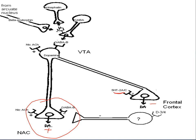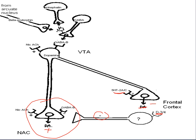Too much serotonin in the frontal cortex causes less dopamine to be released, which is where we see the negative symptoms and cognitive effects. Also, less dopamine activity from the frontal cortex removes the brakes off the nucleus accumbens, further increasing dopamine release there. So: nucleus accumbens — too much dopamine — positive symptoms; frontal cortex — too much serotonin, too little dopamine — negative and cognitive symptoms.